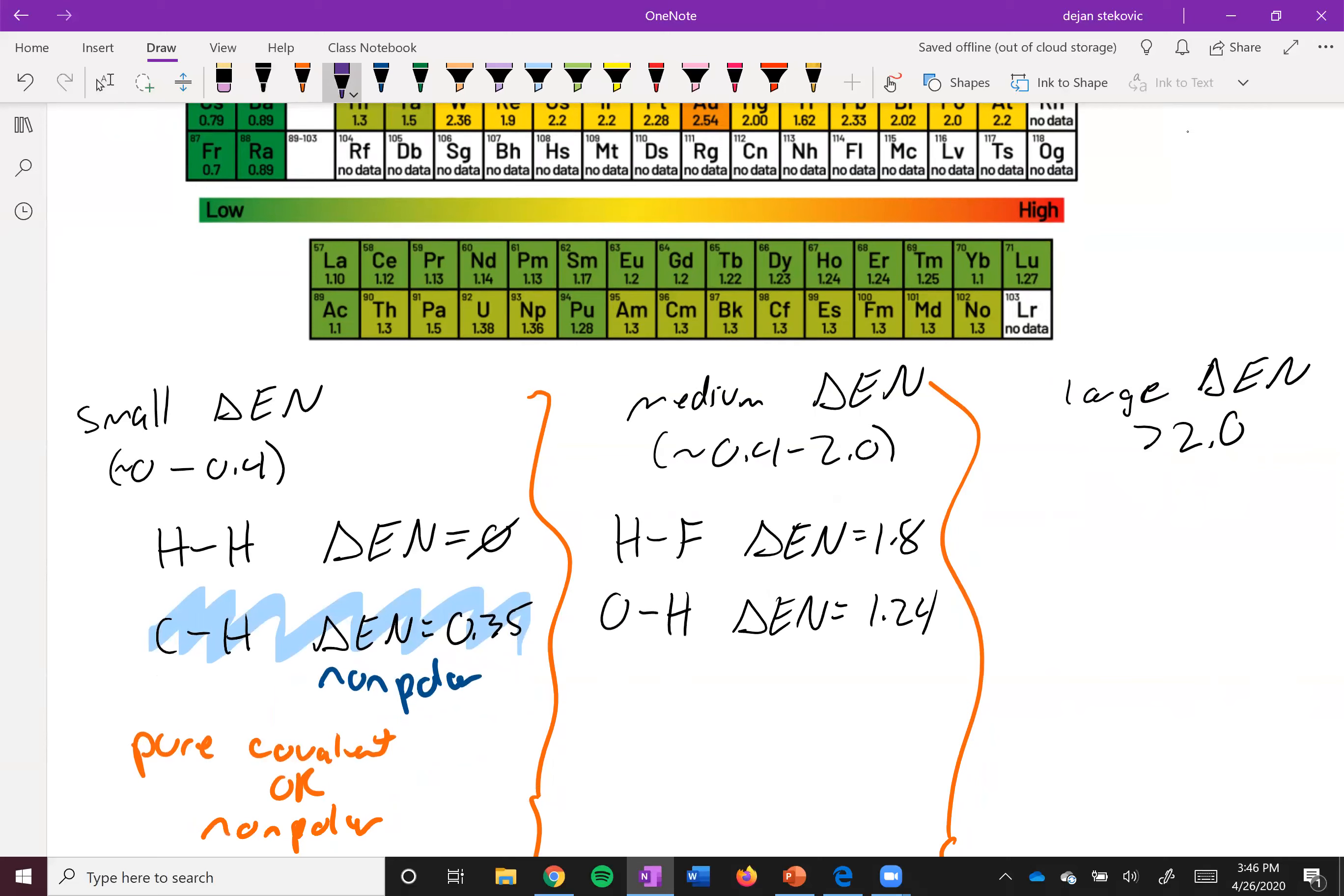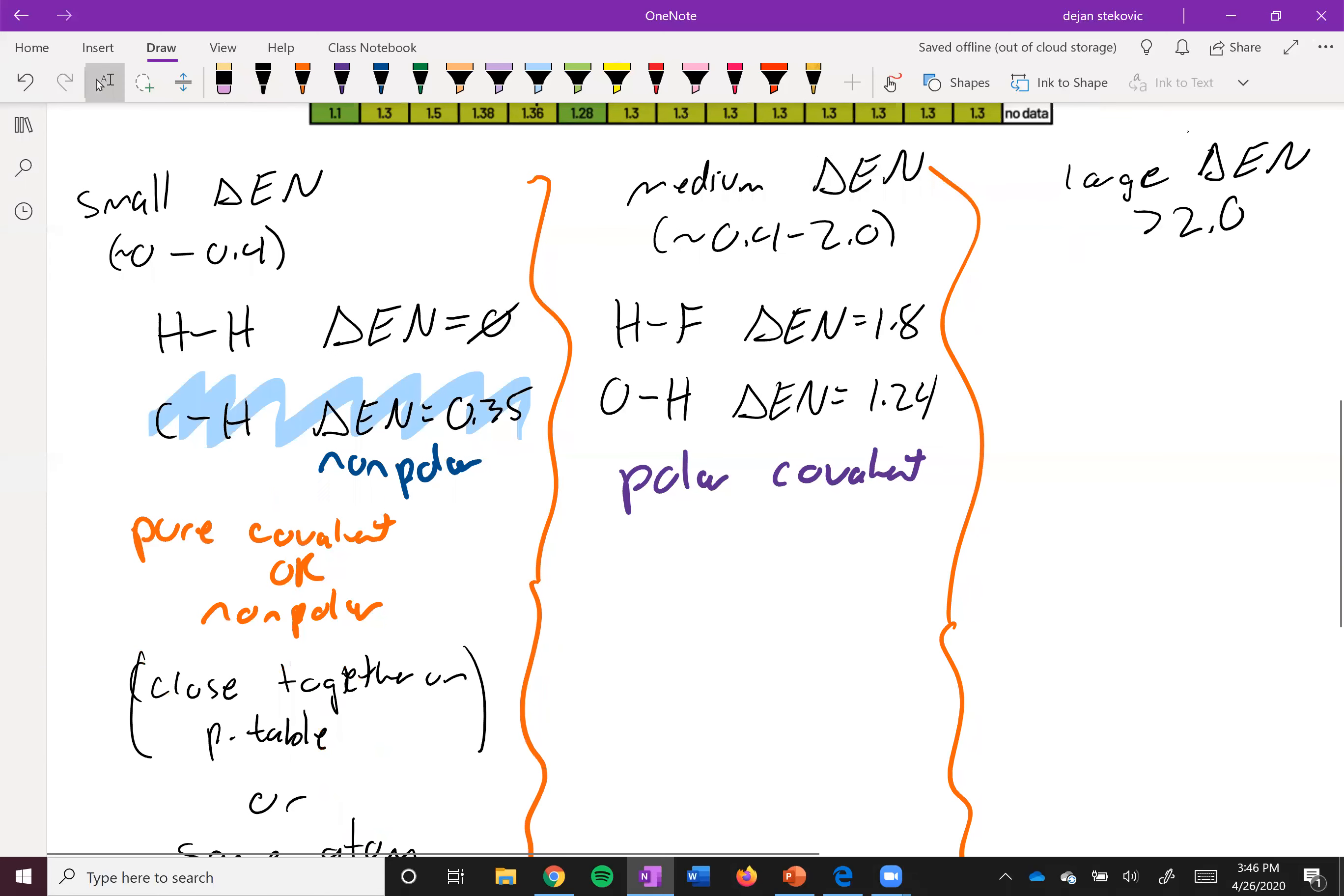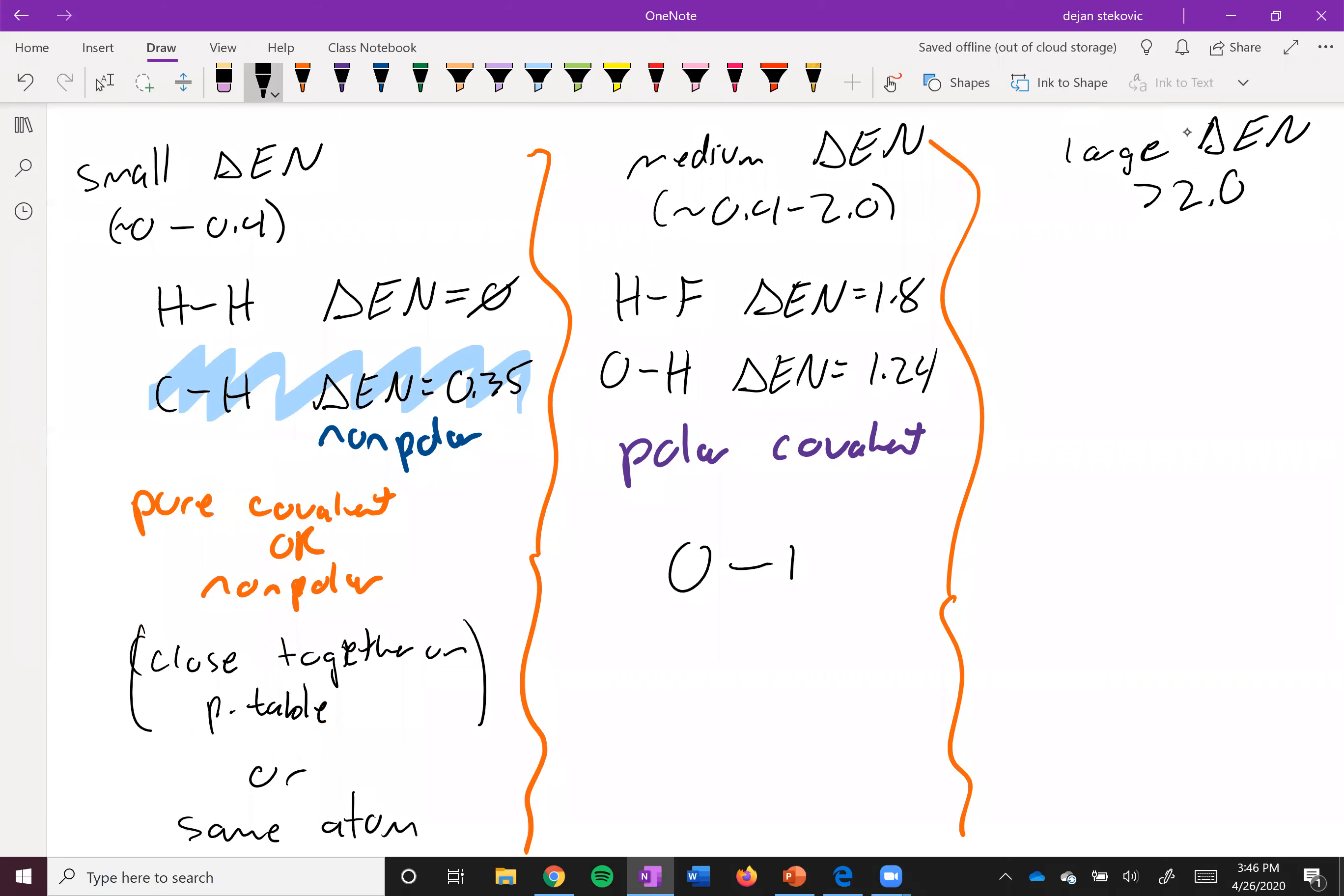This is what's known as a polar covalent bond, right? We have a difference in electronegativity now. So we have a difference in how hard these nuclei are pulling on these electrons. And so we have uneven sharing of electrons. So when you think about an OH, there's a partial negative on the oxygen because it's more electronegative and a partial positive on the hydrogen.